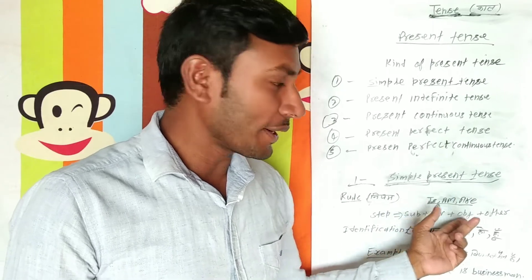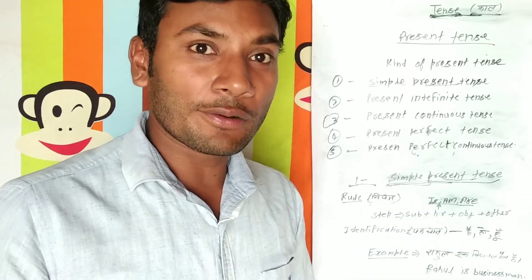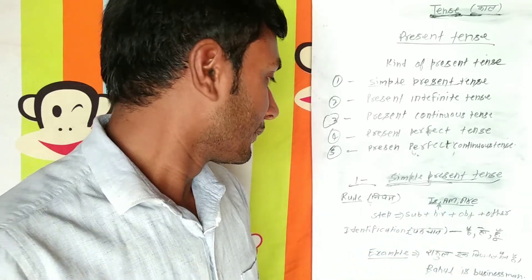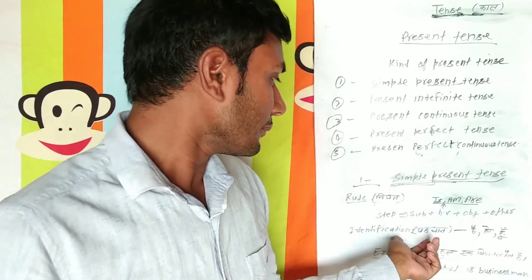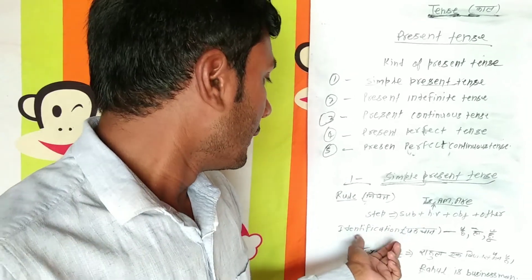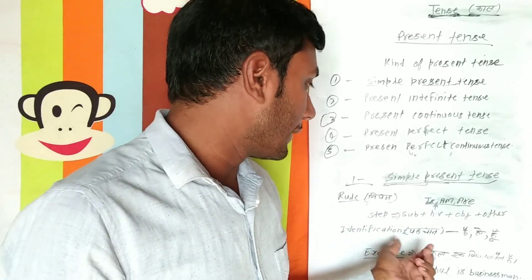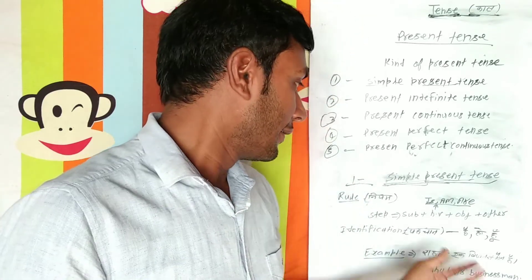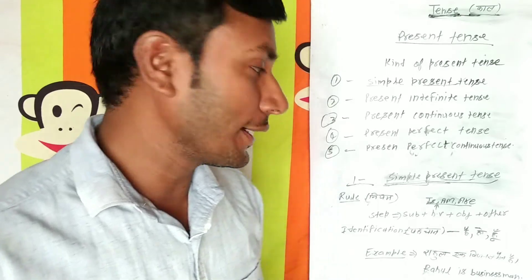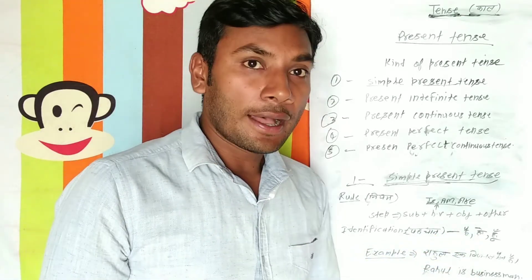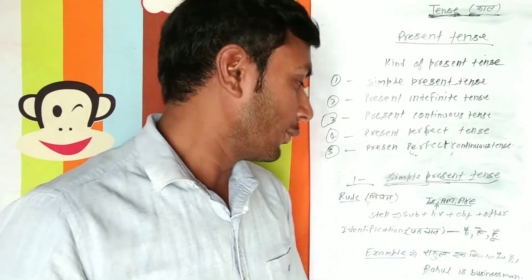Now we have taken identification in Hindi — pachan. In Hindi, we have identified: hai, ho, hun.